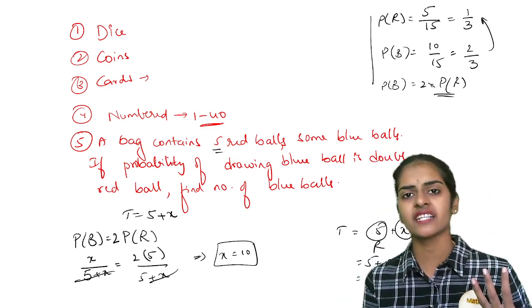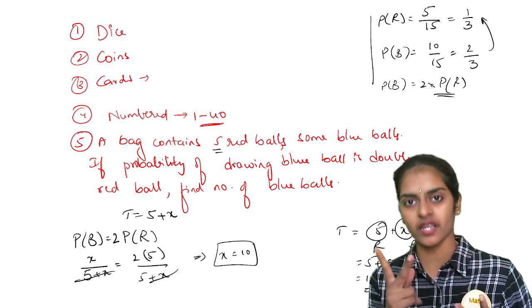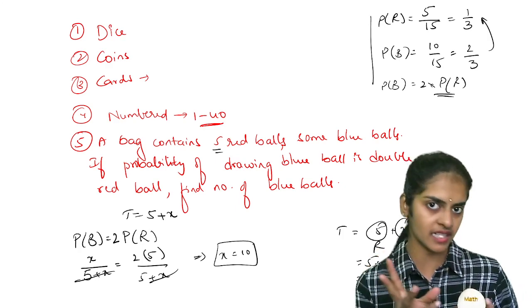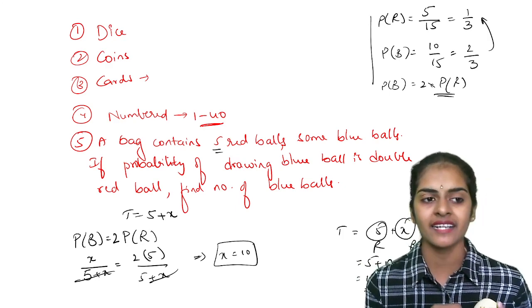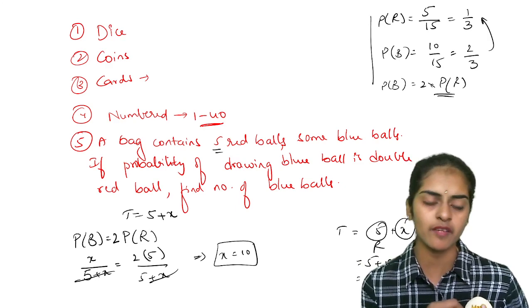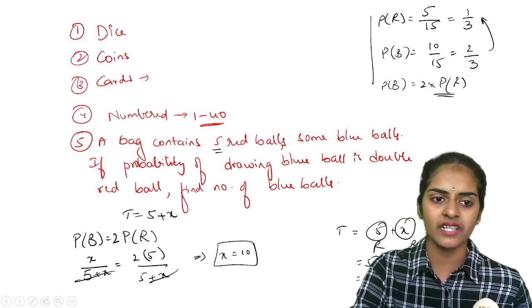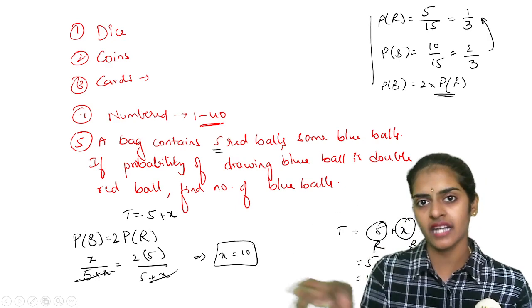One is dice. Do at least one question on dice, one question on coins. Two coins tossed at a time, three coins tossed at a time. Simple ones you have and cards. Cards, I have explained the questions very clearly in the channel already from ABS Deepika questions. So do check it out.